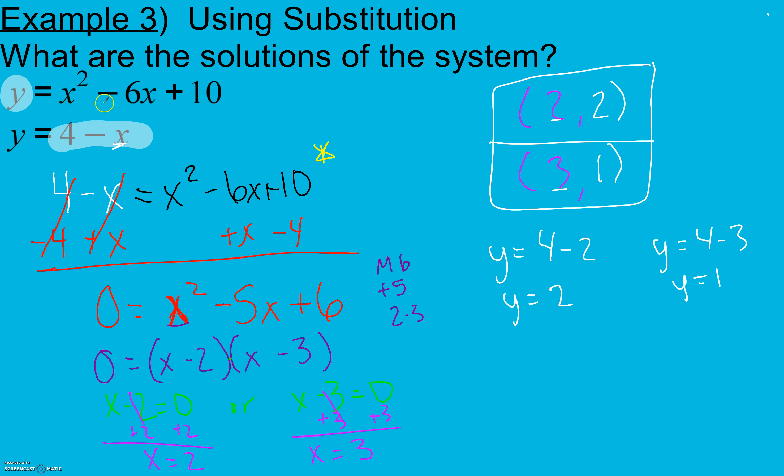We can double check those by plugging them back in. For example, 2 squared is 4 minus 6 times 2 is 12 plus 10 gives me 2. And 4 minus 2 gives me 2. 3 squared is 9 minus 6 times 3 is negative 18, so negative 9 plus 10 gives me positive 1. And 4 minus 3 gives me 1. So both of these answers check.